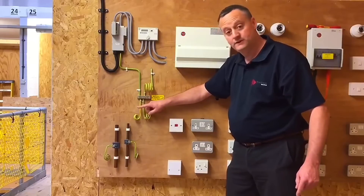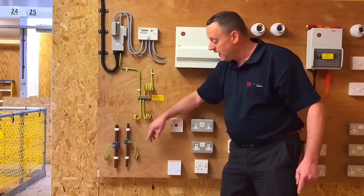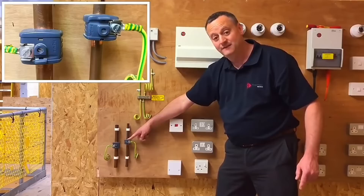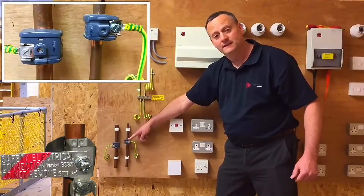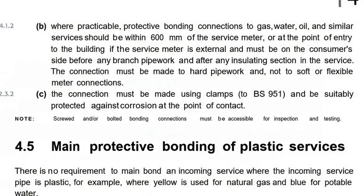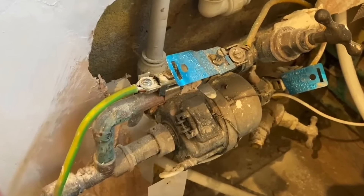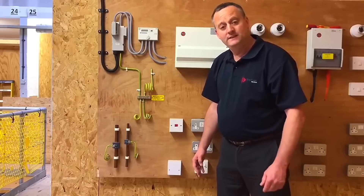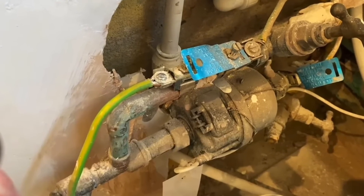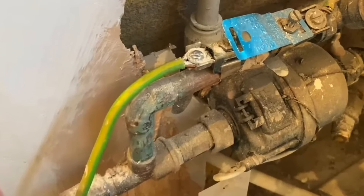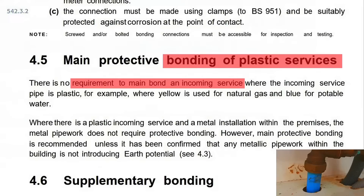The protective bonding conductors, simulating going to gas and water, are terminated. They must be terminated with a clamp that says 'Safety Electrical Connection — Do Not Remove'. That clamp is to be terminated within 600mm of the incoming point — in other words, consumer side, after the water stop tap, after the gas meter, within 600mm of entering the installation. However, if there is a T-piece — what the regulations call a branch — the clamp must be made before that branch if it is under 600mm. So it's within 600mm or before the first branch in order to make these connections.